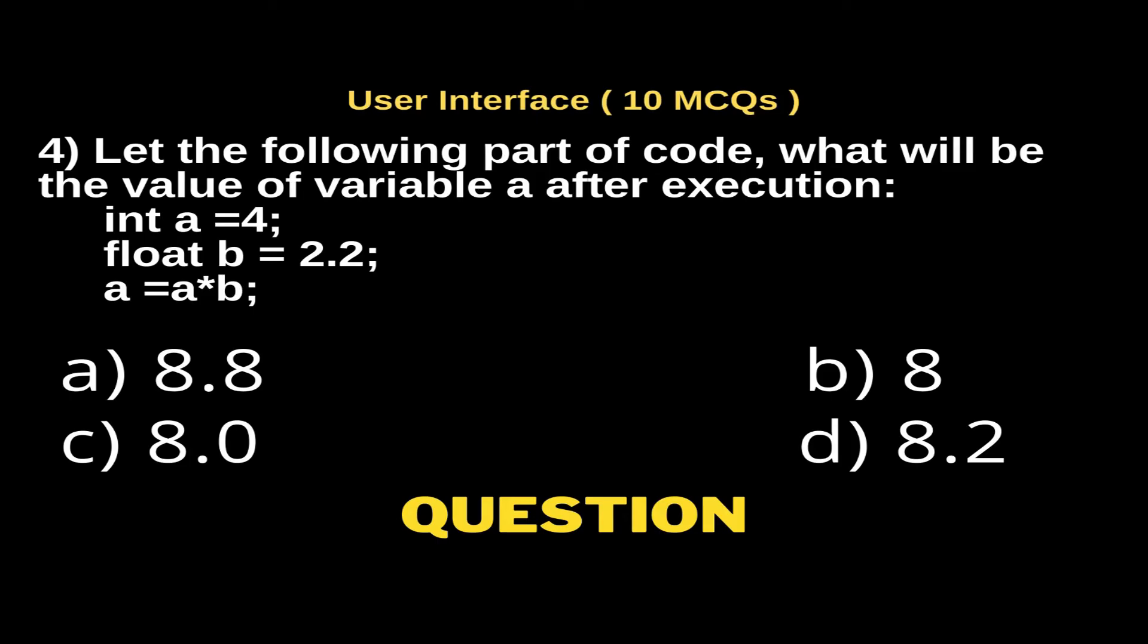Question 4: Let the following part of code, what will be the value of variable a after execution? Program is: int a = 4, float b = 2.2, a = a * b.